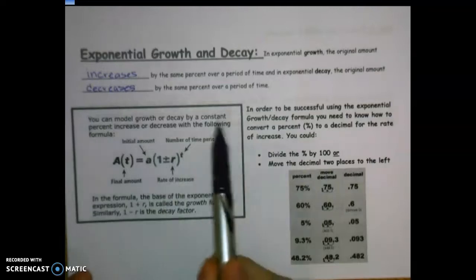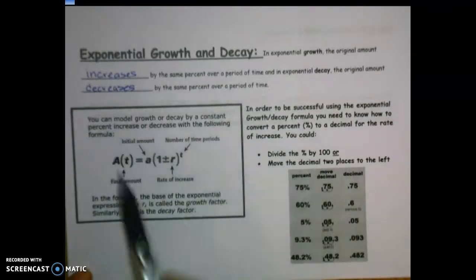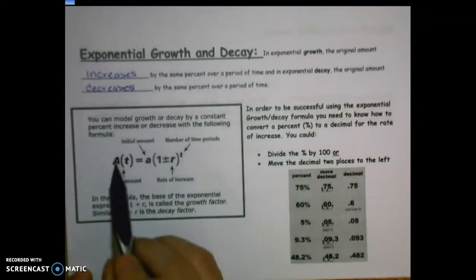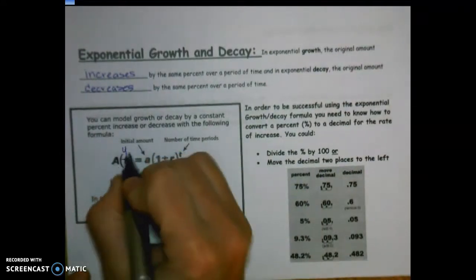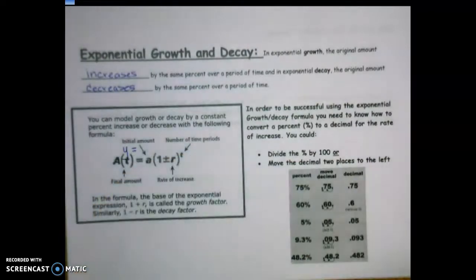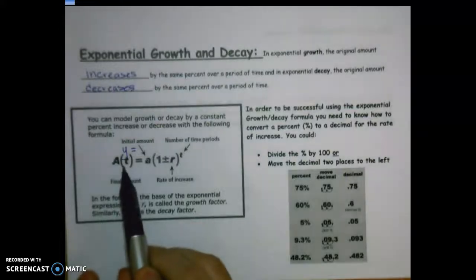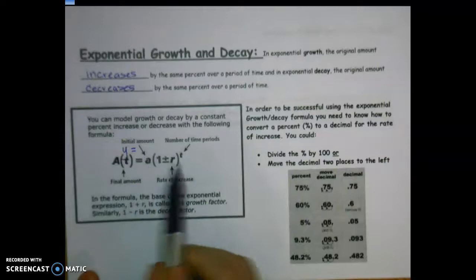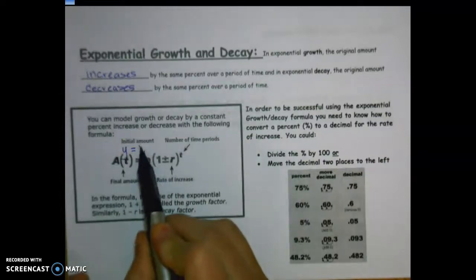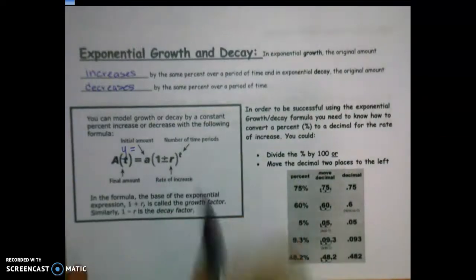Here's the formula: A(t), which I'll often write as y equals. Remember from the beginning of the year, y equals or f(x) equals means the same thing. This is going to be your final amount — usually your answer, what we're looking for. These are the values you plug in. A is the initial amount, whatever number they give you to start.